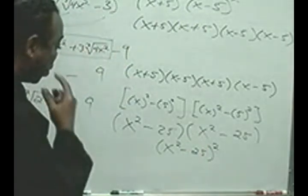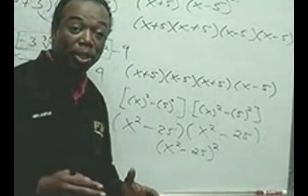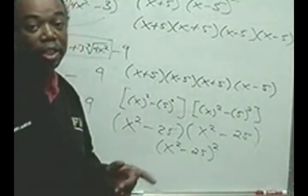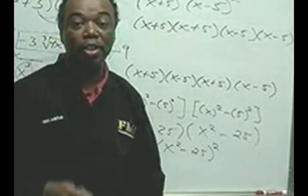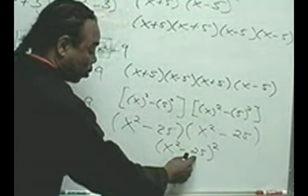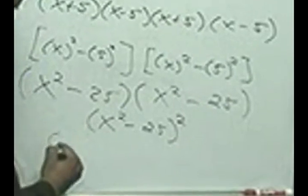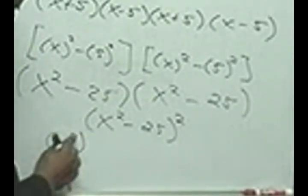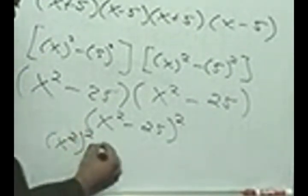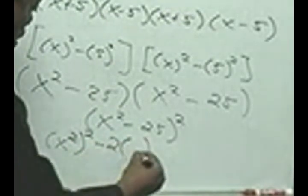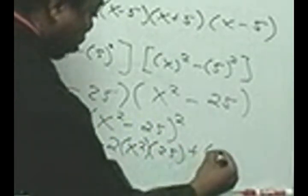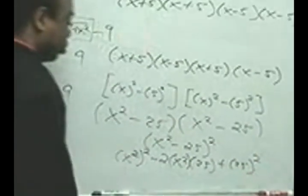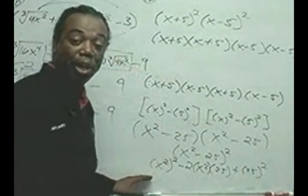And lastly, I'm going to use my binomial expansion rule for a minus b. The binomial expansion rule for a minus b is a squared minus 2 times a times b plus b squared. This is a, and that's b. So, a squared minus 2 times a, then times b, then plus b squared.